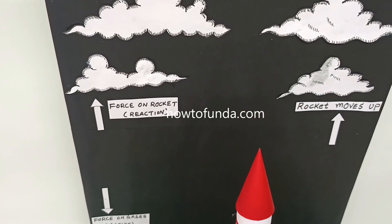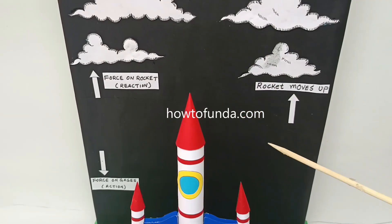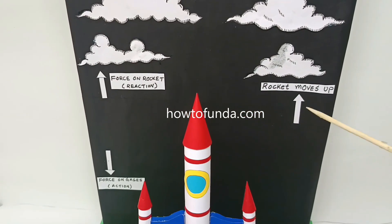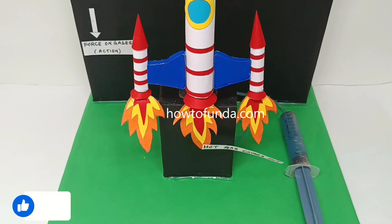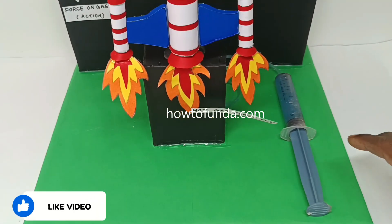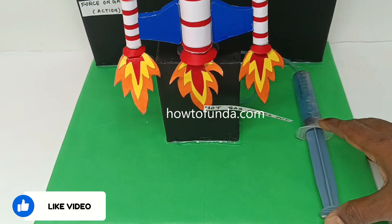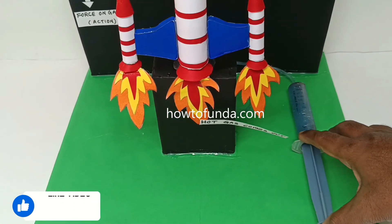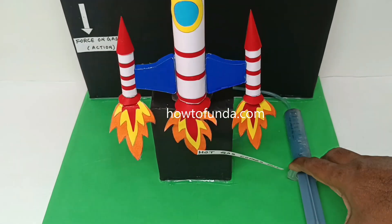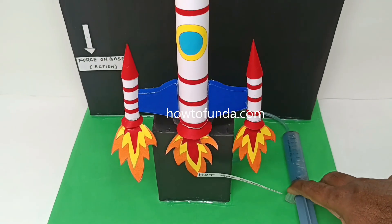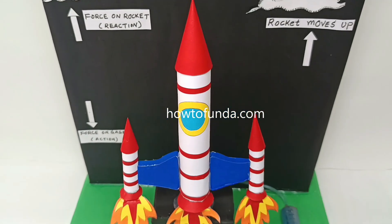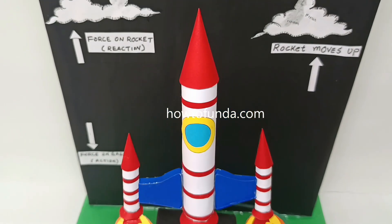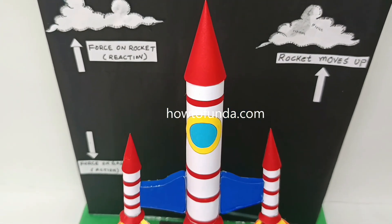In this video we have used syringes as a mechanism to push the rocket. When we push one syringe, an equal and opposite reaction happens in the other syringe, and because of that the rocket is propelled towards space.